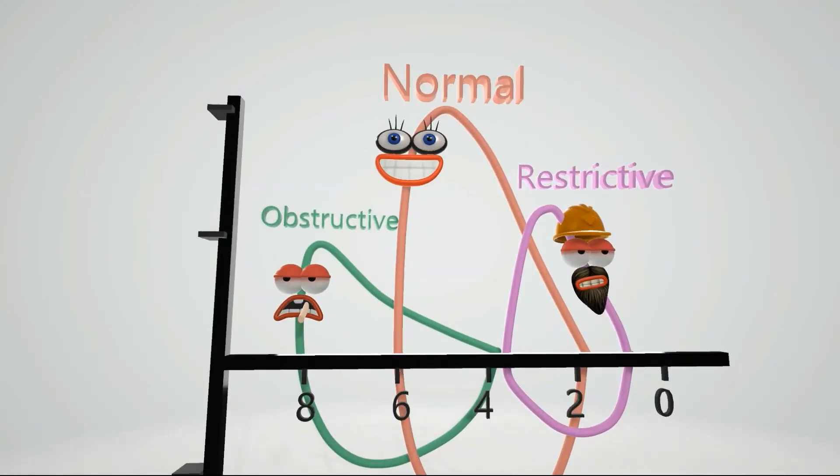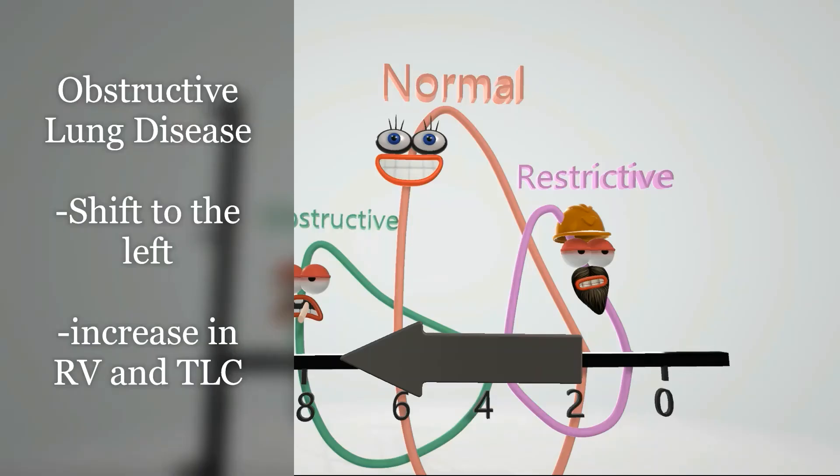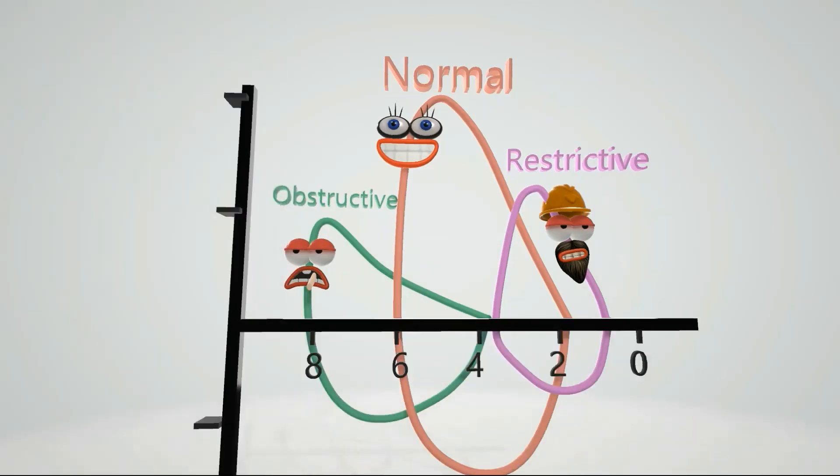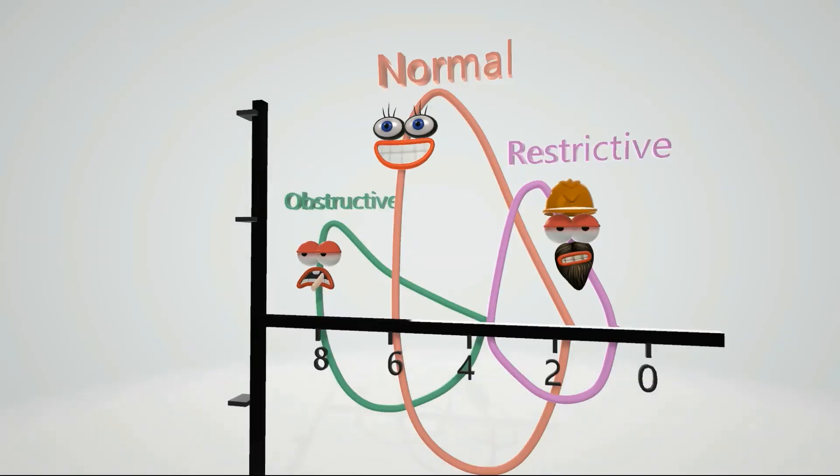We note that the entire curve shifts to the left, because there is an increase in residual volume due to air trapping and an increase in total lung capacity. The total lung capacity goes from normal, which is at 6, to larger than 8 liters. We also note the characteristic kink, due to the obstruction during inspiration.